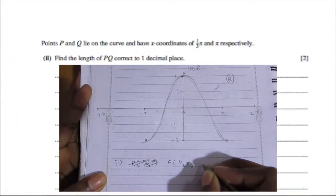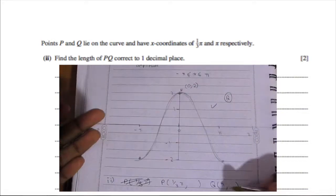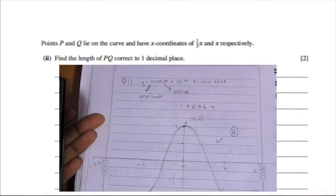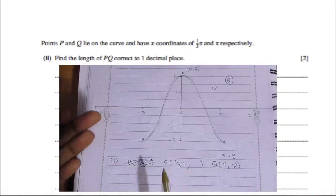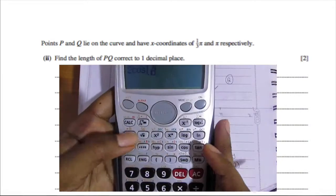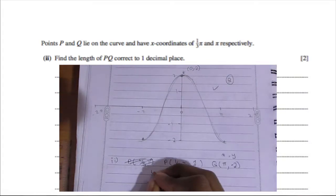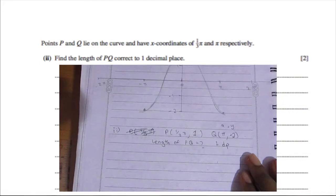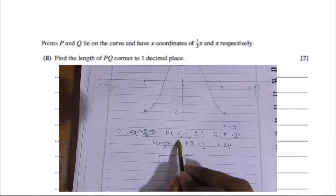On to the second part. Points P and Q lie on the curve and have x-coordinates of π/3 and π respectively. We need to find the length of PQ correct to one decimal place. We already know the x-values, so we find the y-values: 2 cos(π/3) gives 1, and from part one we already know that at x = π, y = −2.